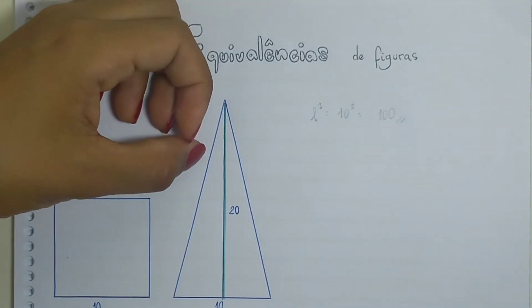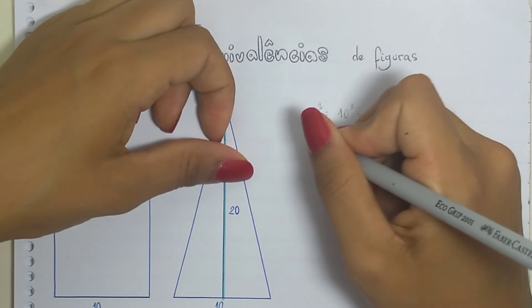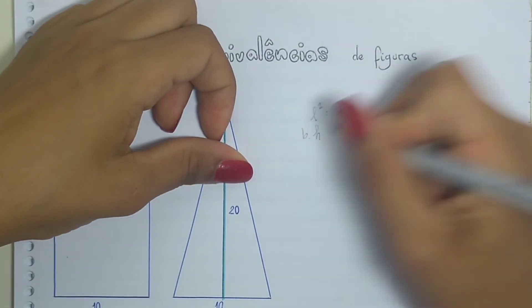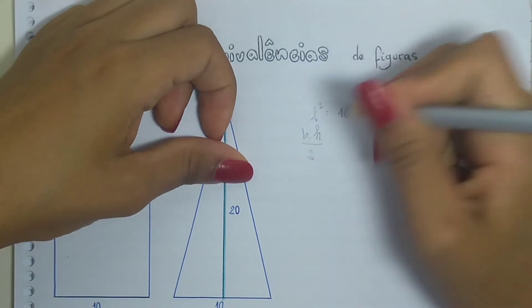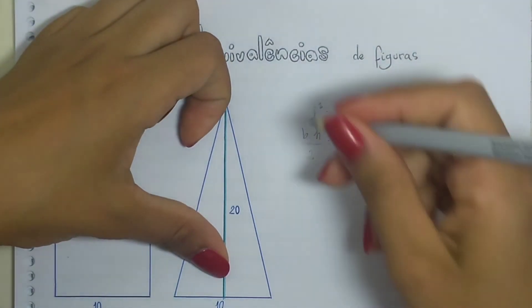And the area of the triangle? The area of the triangle is base by the height divided by 2. So, let's see here.